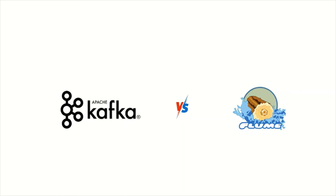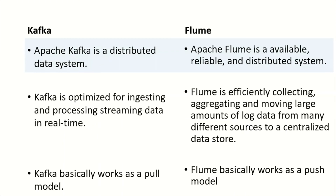In this video we are going to look at the difference between Apache Kafka and Apache Flume. Apache Kafka is a distributed data system, whereas Flume is an available, reliable and distributed data system. That means Kafka can have multiple nodes and all those nodes together can form a cluster, and the same is the case with Flume as well.